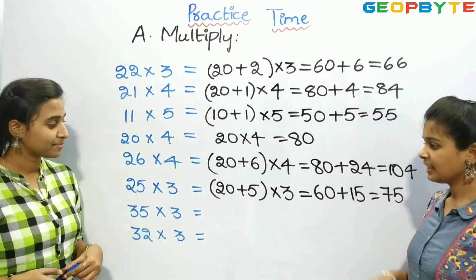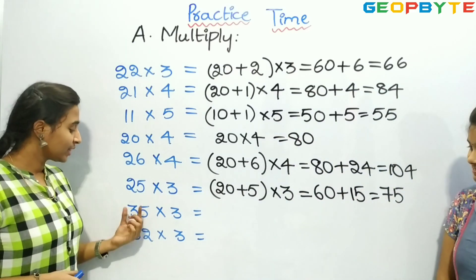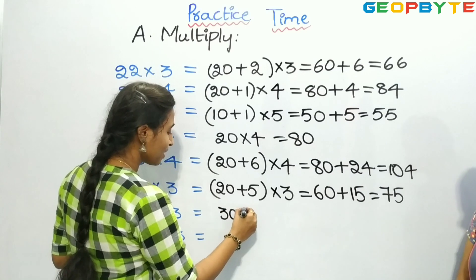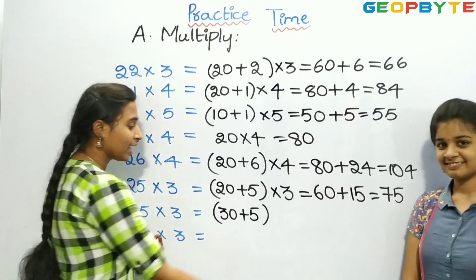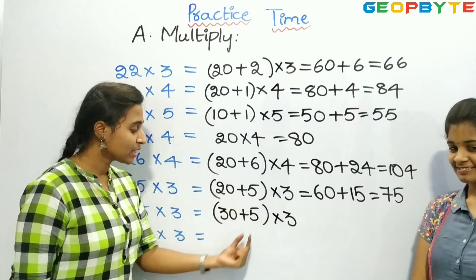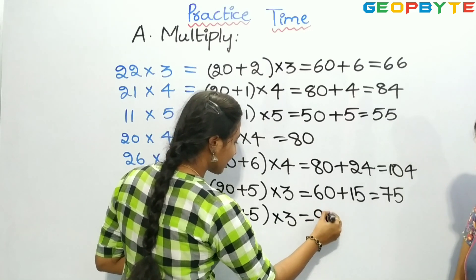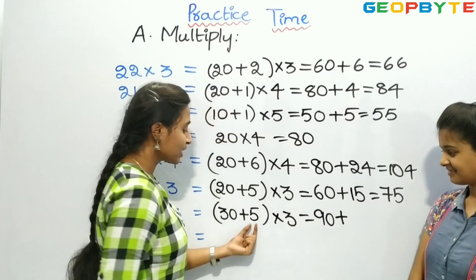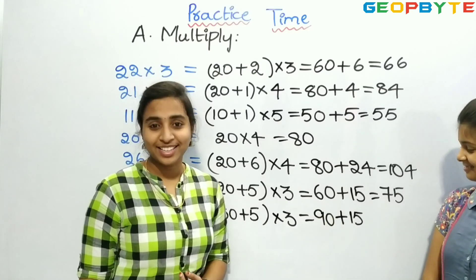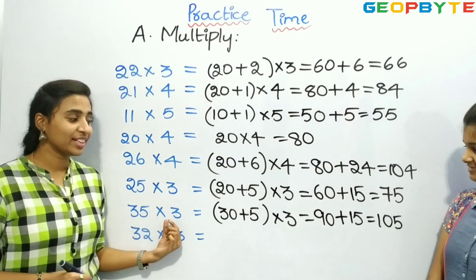Now let us see the next one: 35 into 3. Children, let us split 35 as 30 plus 5, into 3. We need to multiply 30 and 3 plus 5 and 3. 3 threes are 9, and we have a 0, so it is 90. Plus, 5 threes are 15. So 90 plus 15 is equal to 105. So 35 threes are 105.